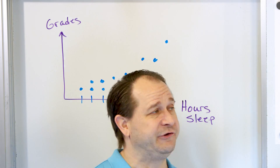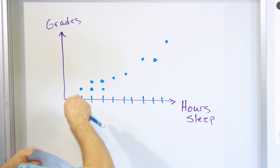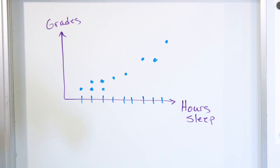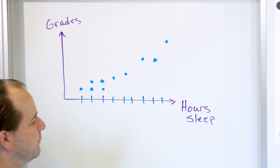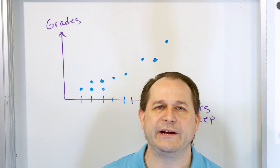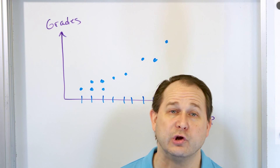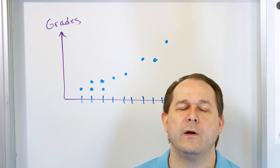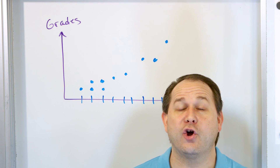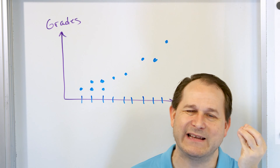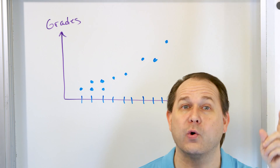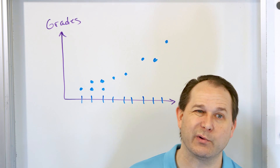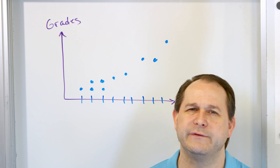Positive correlation means both things we're studying tend to go up at the same time. Negative correlation generally means that as one goes up, the other goes down — they go in opposite directions. And then we have something called no correlation: if the hours of sleep had nothing to do with grades, we'd have data points all over the place with no trend line at all, just dots randomly thrown on the board. When we get into more advanced math, we'll calculate something called the correlation coefficient — a number that tells you how correlated the data is.